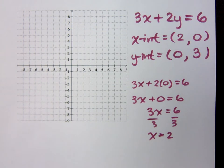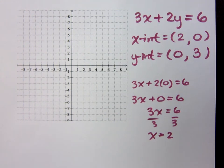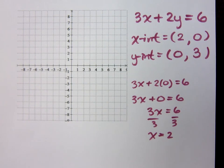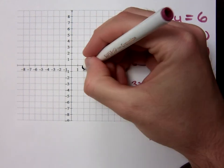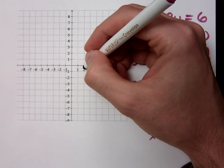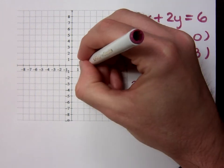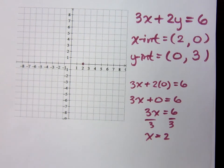Now, what are we going to do with these points? Plot them. Where does every X-intercept go? On the X-axis. So it goes at (2, 0) — it's the X-intercept. They're numbered, you can see the sign. Put a dot right there. And where does every Y-intercept go? The Y-axis — it goes on the Y-axis all the time. This is a positive 3, so he goes right here.